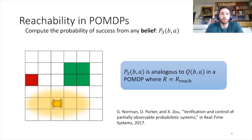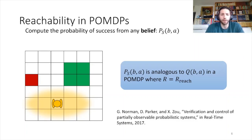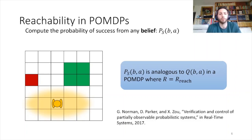A specific case of a model checking problem is the problem of reachability. Look at this grid world problem where the robot only has imperfect observation of its position, so it can only reason about a distribution of possible locations. The problem is to reach the green set of states while avoiding the red states. The solution is to compute a probability of success for every possible belief state. It turns out we can reformulate this reachability problem using a well-defined reward function that can be automatically constructed, then use any planning algorithm to solve it.